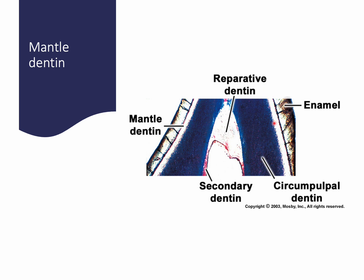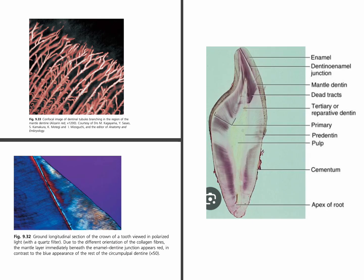The mantle dentine is the layer of dentine seen under the dentine-enamel junction and is always marked by a lighter color in histological sections. The fibers in this area are more perpendicular to the dentine-enamel junction and it is more mineralized. In this low-magnification section you can see a white, well-defined thin line under the dentine-enamel junction — this is the mantle dentine.